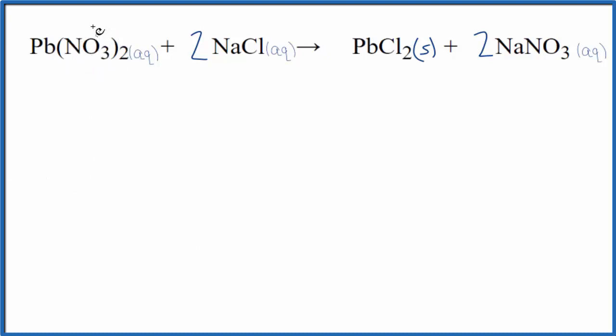We know that the nitrate ion has a one minus charge and we have two of them, so we need to have a two plus here for the lead in order to balance the charges out. Sodiums in group one has a positive charge, chlorine group 17 is negative, so we have a negative one here. So we need positive two here again, and then we have positive and negative.